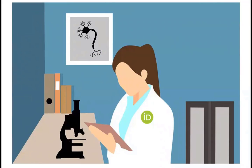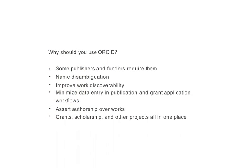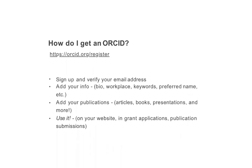In the case of our previous example, Barbara Miller, she would not have to worry about being mistaken for another researcher also named Barbara Miller or something similar. The same ID can continue to be used even if the researcher goes to a different institution, a different country, or even a different field altogether. Some reasons to use ORCID: some publishers and funders now require them because of name disambiguation, improved work discoverability, minimized data entry in publication and grant application workflows, asserting authorship over works, and because grants, scholarships, and other projects will all be in one place.